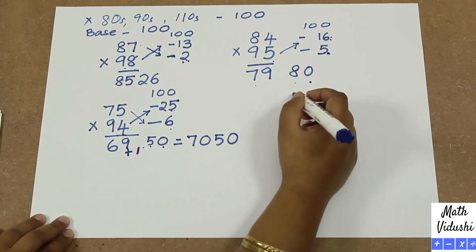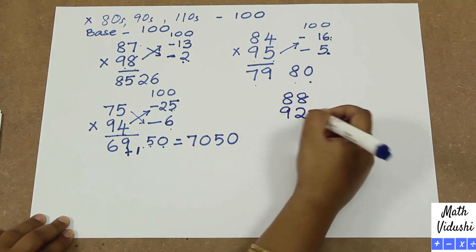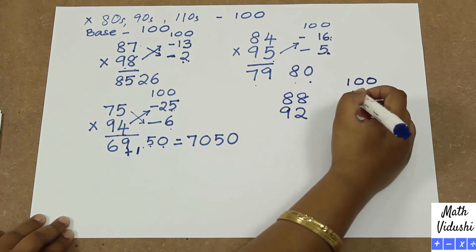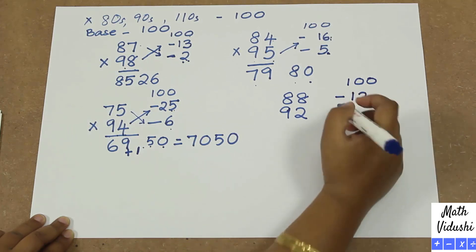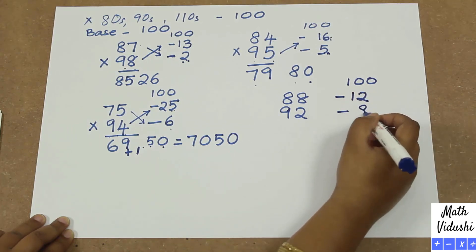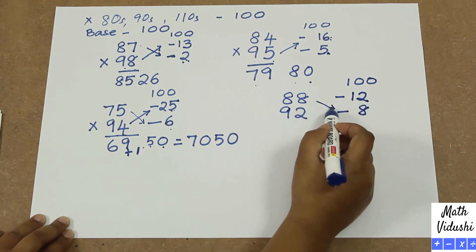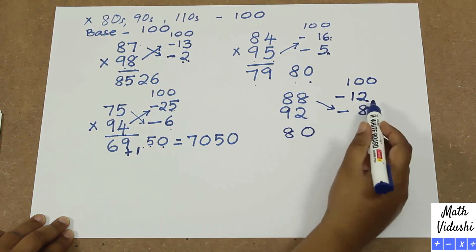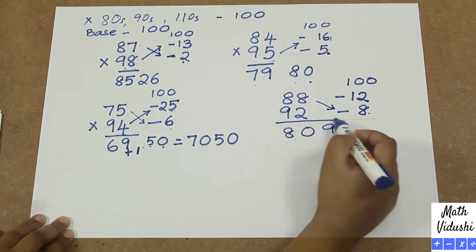So we will do another one. 88 multiplied by 92. 100 minus 12 is 88, and 100 minus 8 is 92. So we do 88 minus 8, which is 80, and then 12 into 8, which is 96.